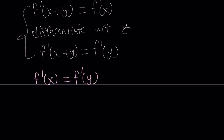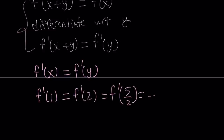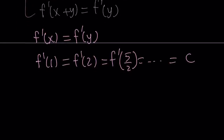This is really interesting because x and y are free variables — they can be different. So this tells us that no matter which variable you use, the derivative of f is always the same. For example, f'(1) = f'(2) = f'(5/2), and so on. The only way two expressions in different free variables are always equal is if the derivative equals a constant — let's call it c.